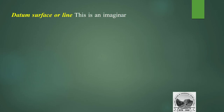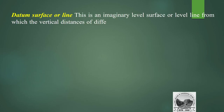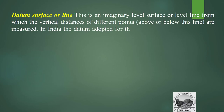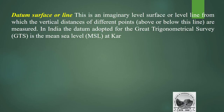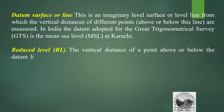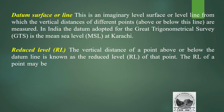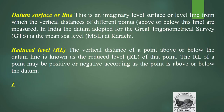Datum or datum line: this is an imaginary surface or level line from which the vertical distances of different points above or below it are measured. In India, the datum adopted for the Great Trigonometrical Survey (GTS) is the mean sea level at Karachi. Reduced level: the vertical distance of a point above or below the datum line is known as the reduced level of that point. It may be positive or negative depending on whether the point is above or below the datum.